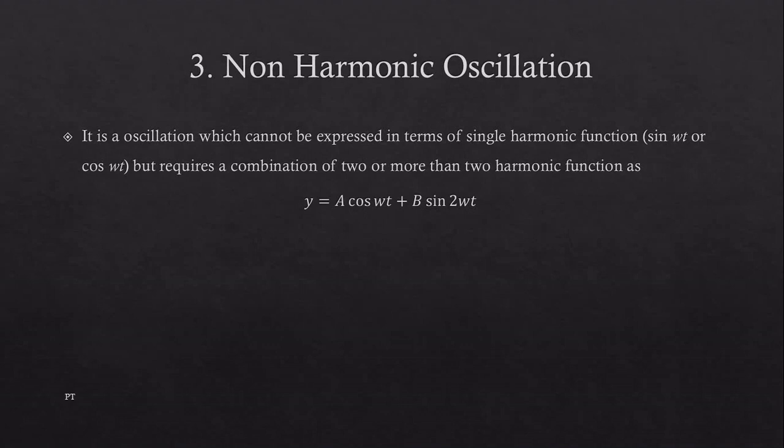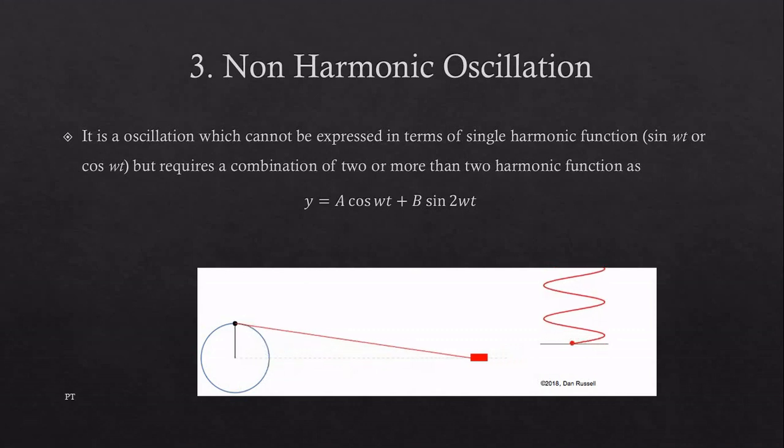Non-harmonic oscillations: it is oscillation which cannot be expressed in terms of a single harmonic function, that is sin(ωt) or cos(ωt), but requires a combination of both or more than two harmonic functions, such as y = A cos(ωt) + B sin(2ωt). It is shown something like this, or we can say a crankshaft mechanism, and this is the combination of sine function and cosine function.